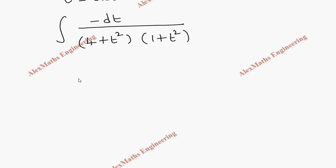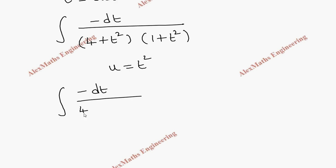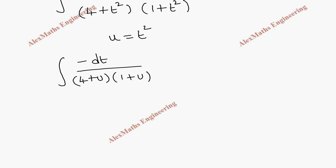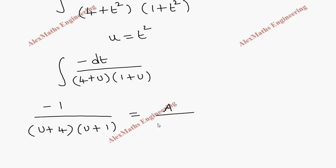We have non-factorizable quadratic expressions. To simplify, let's take u = t², so the integral becomes minus du divided by (4 + u)(1 + u). We can now apply the partial fraction rule for two different linear factors: minus 1 divided by (u + 4)(u + 1) equals A/(u + 4) plus B/(u + 1).